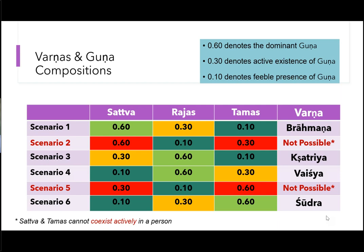Scenario 2: Sattva is very high, no Rajas, Tamas is very high. If you understand Guna theory, this dominance must be contiguous — you cannot have the two dominant values separated by something in between. That's not possible because these Gunas have a certain continuity; one grows on the other. So the second scenario is simply not possible.